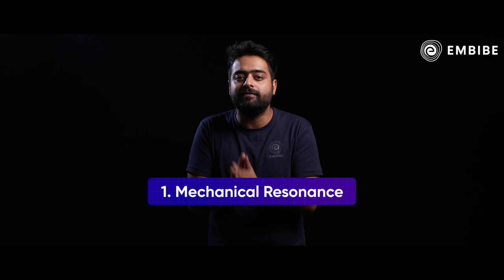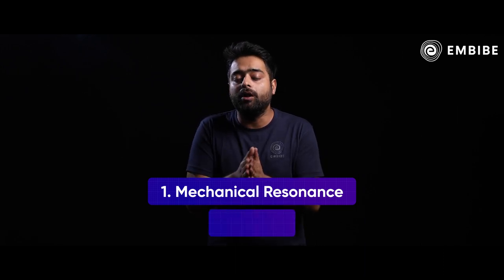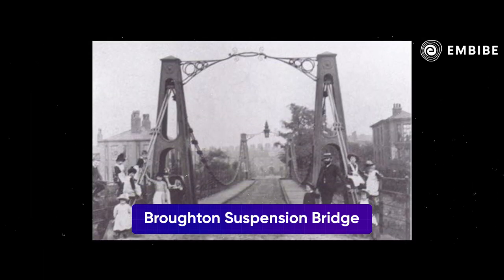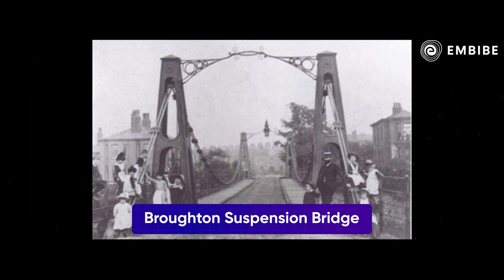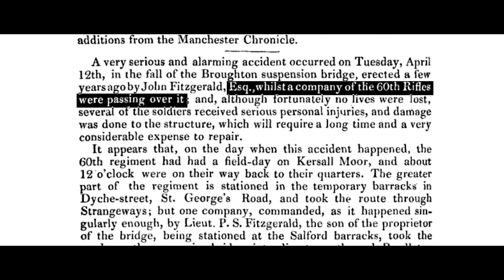But a bridge can fail under many conditions. Number one: mechanical resonance. Number two: overload. In April 1831, in Broughton, England, soldiers were marching on a suspension bridge. Due to their marching frequency matching the bridge's natural frequency, resonance was created and the bridge collapsed.